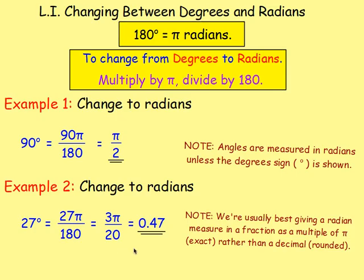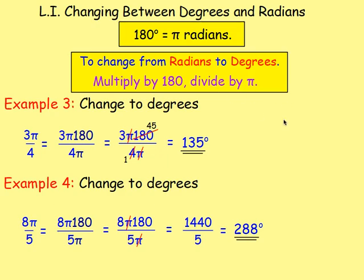Most of the time you would just leave it as a fraction. But sometimes you may have to work it out as a decimal — just use the π button on your calculator, do 3 times π divided by 20, and write down the result to 1, 2, or 3 decimal places as required. To convert back from radians to degrees, just do the opposite: multiply by 180 and divide by π. A lot of the time the π will cancel in the fraction, and then you're just simplifying your numbers.